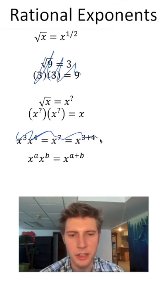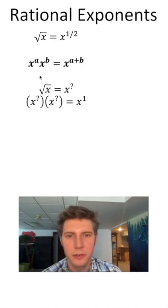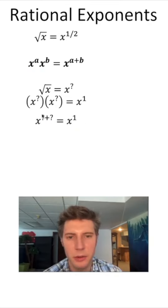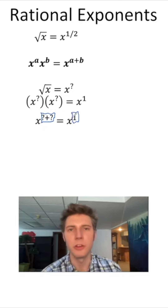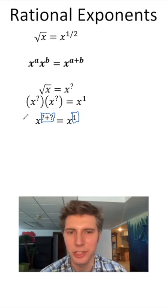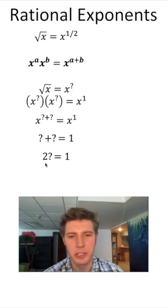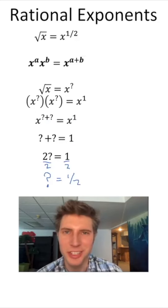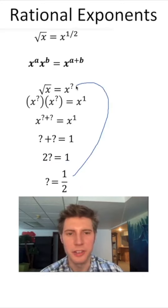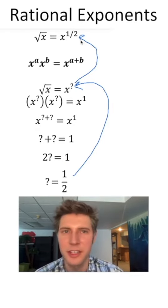Giving the right side an exponent: a single x is x to the 1. Following these rules, x to the question mark times x to the question mark is x to the question mark plus question mark, which equals x to the 1. So now we have x to some power equals x to the 1. The only way this can be true for all possible values of x is if what's inside those exponents is equal: question mark plus question mark equals 1. That's 2 times question mark equals 1, so question mark equals one half. Since question mark was our exponent, the square root of x equals x to the one half.